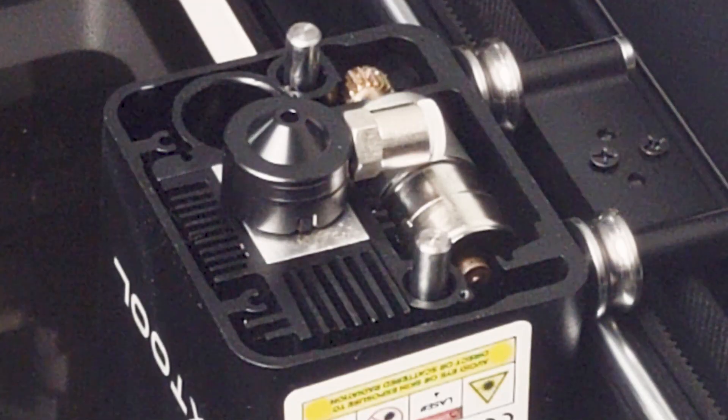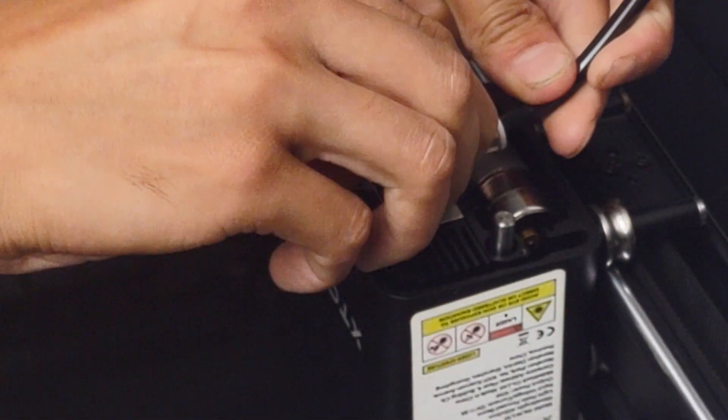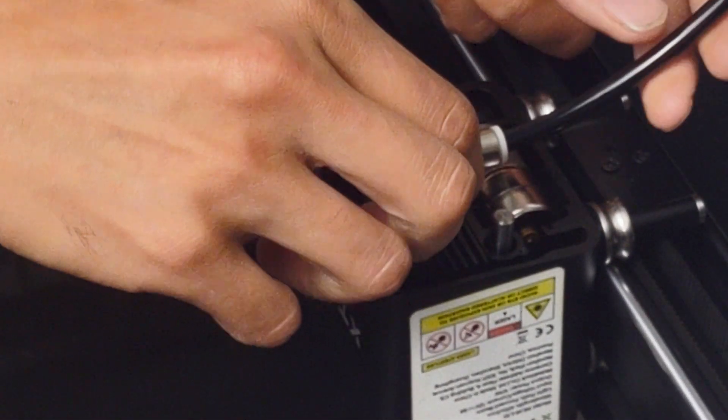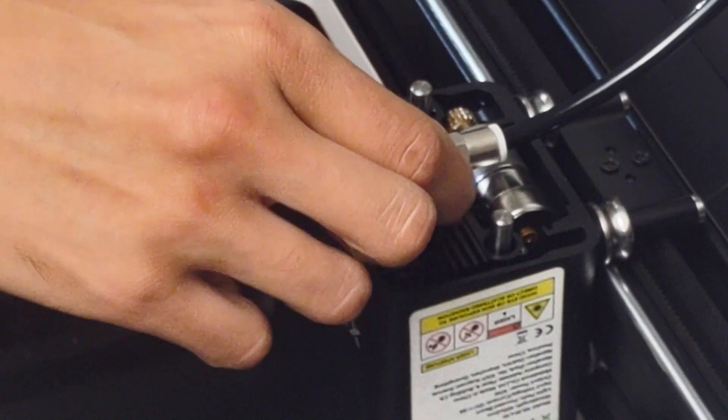So that's what it looks like with the nozzle magneted on. Of course, the tube isn't attached yet. Here it is with the tube attached. You'll feel a strong magnet just kind of click it into place. So the hose needs to start out in that direction.